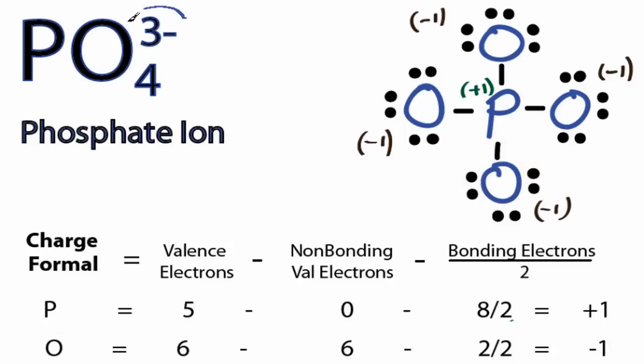So we know we have to end up with a 3 minus as a total formal charge, and that's not working right now. I can see that on the Phosphorus there's this plus 1 right here. What I can do when I see a plus 1 like that, if I move 2 electrons from one of these atoms and form a double bond, that should resolve the plus 1. So let's see if that works.